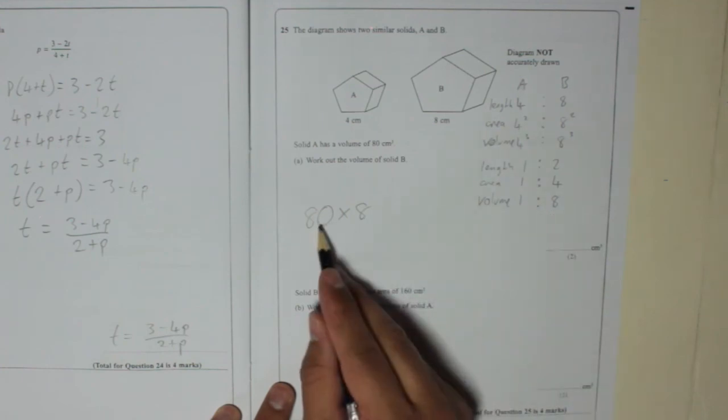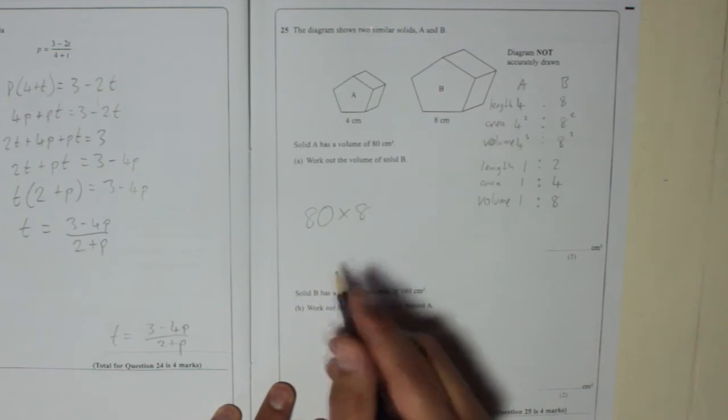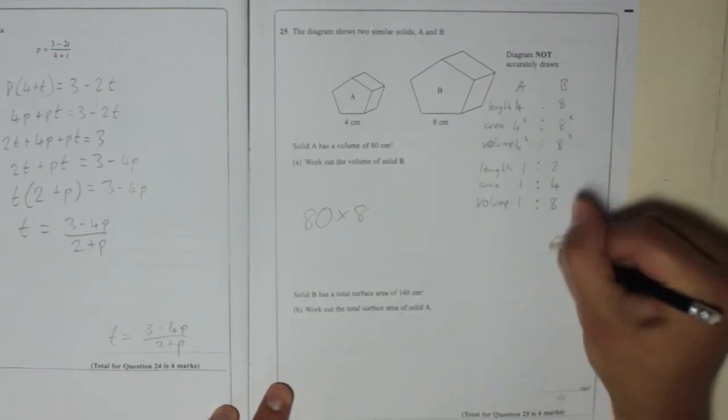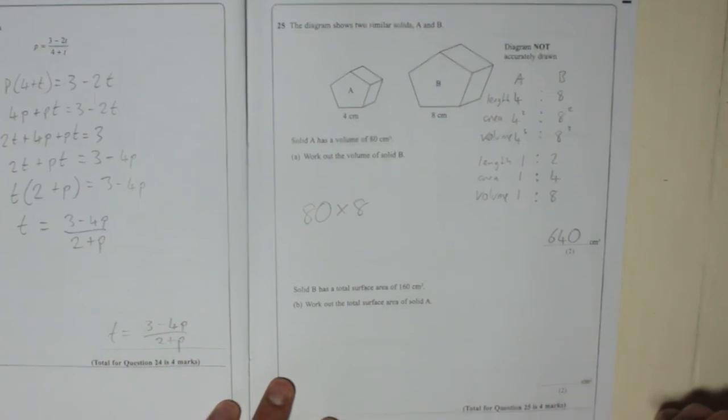So it's 80, that's solid A, 80 centimetres cubed, times by 8. 8 times 8 is 64. So it's 640 centimetres cubed.